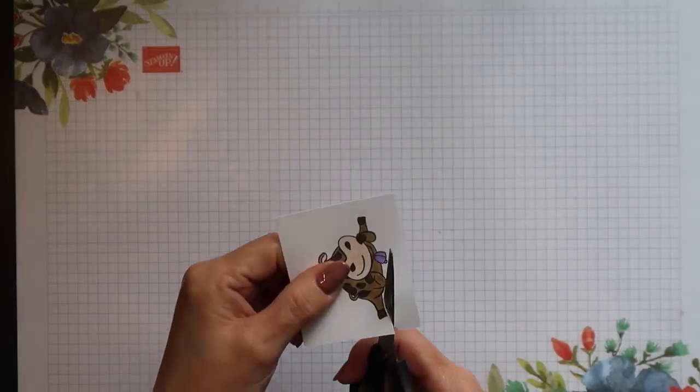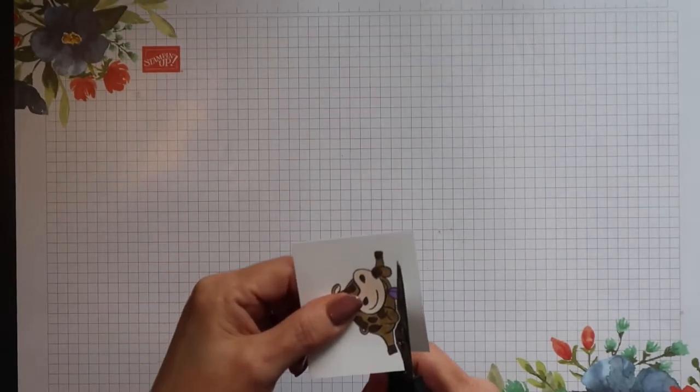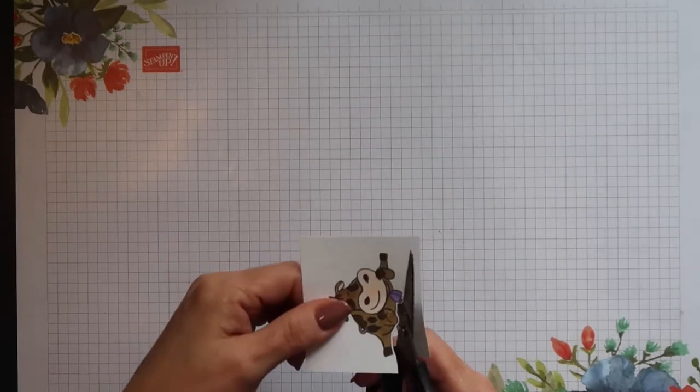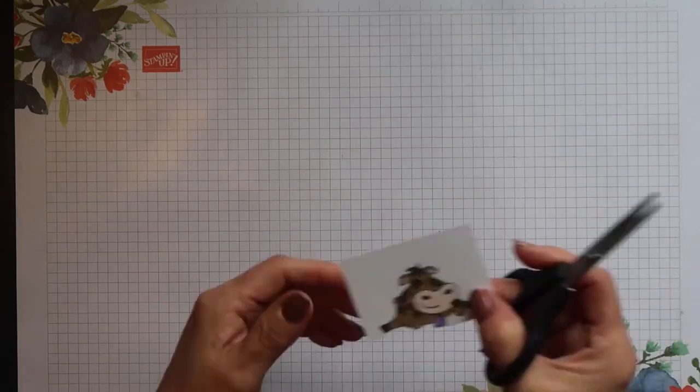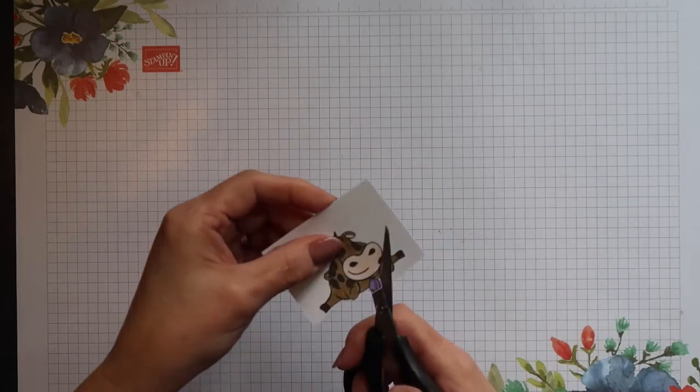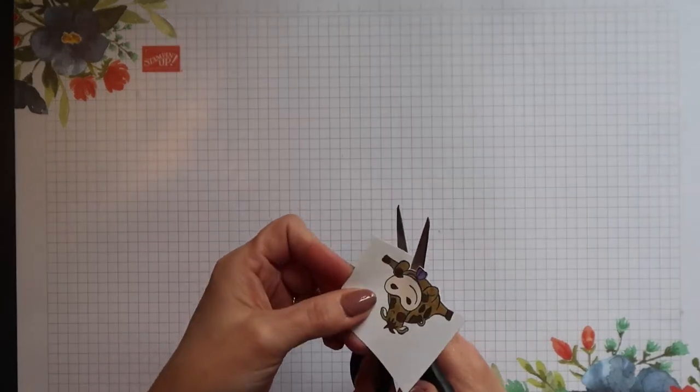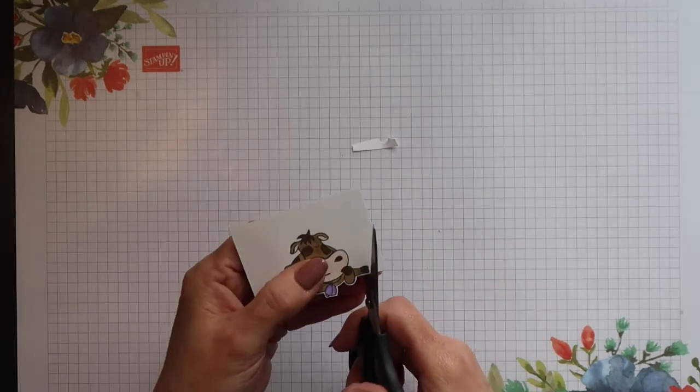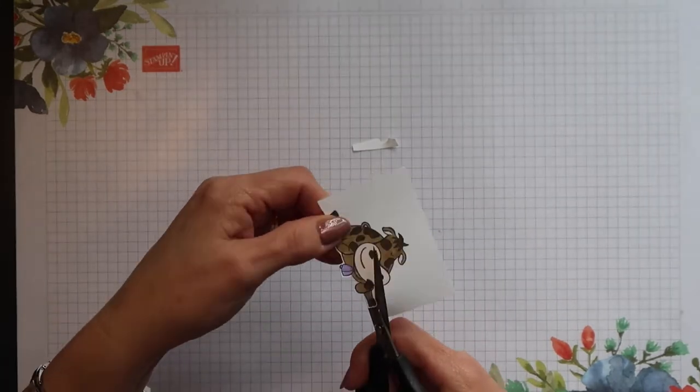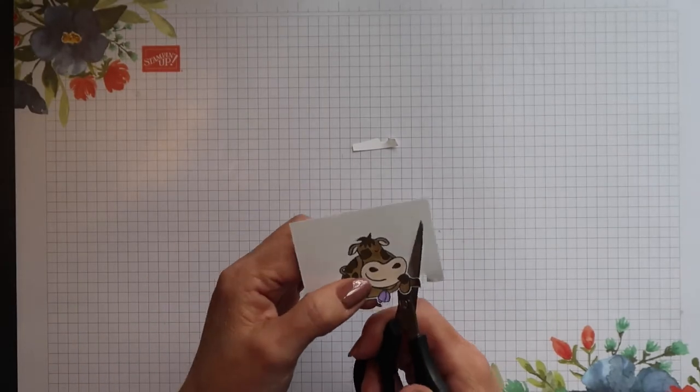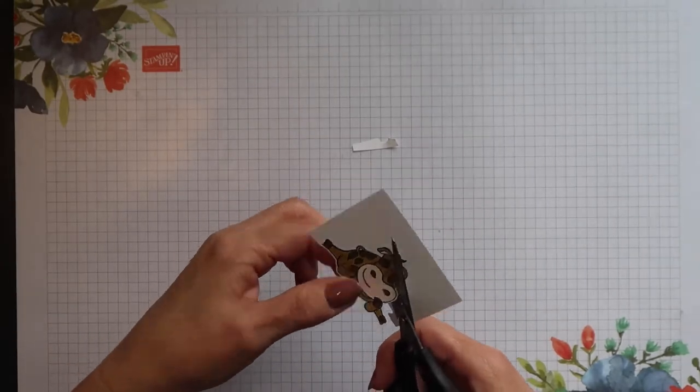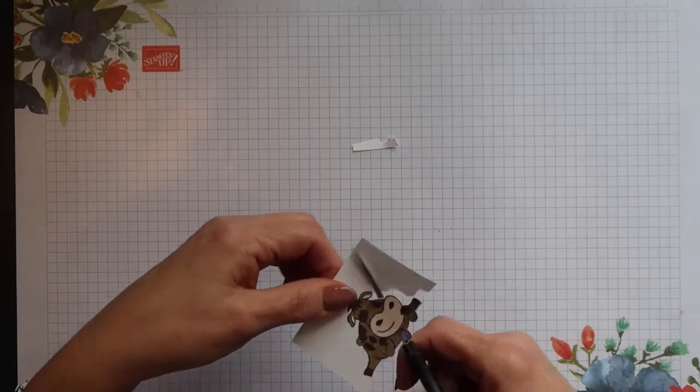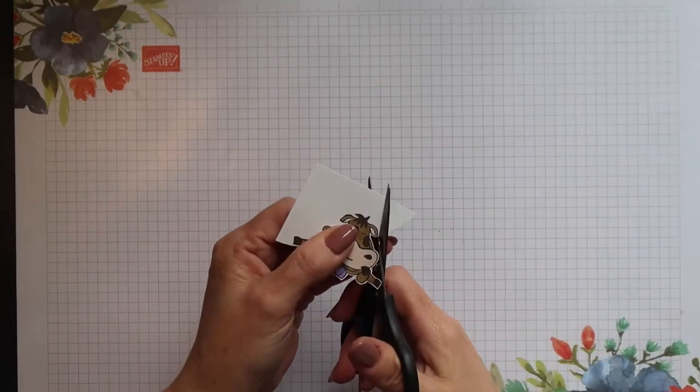There aren't any coordinating dies for these images so they will all have to be cut out by hand. Now I'm cutting around my image and I'm leaving a tiny border of white showing. If you have problems cutting out, you'll find that leaving a little border around it is much easier than trying to follow the outside line exactly.